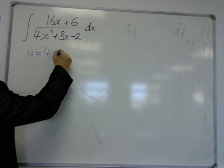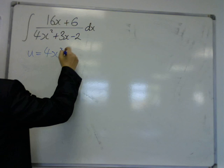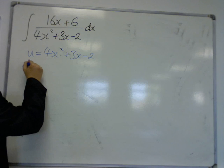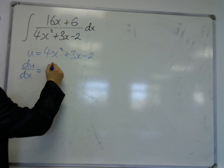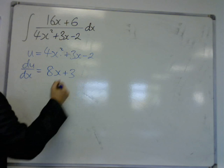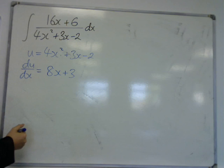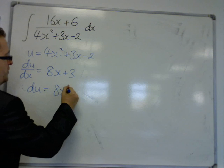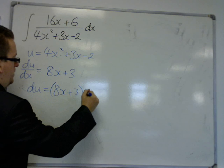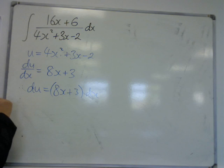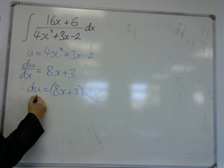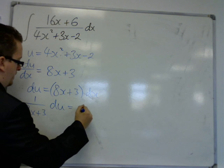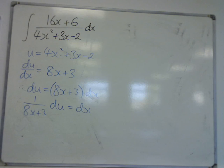u is equal to 4x squared plus 3x minus 2. So, du by dx is 8x plus 3. Multiply both sides by dx. So, you'll notice it's the same process each time. And then divide both sides by the 8x plus 3.